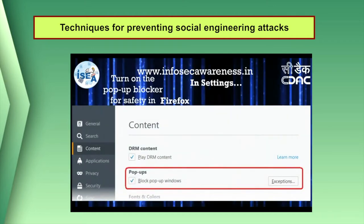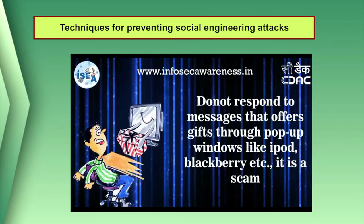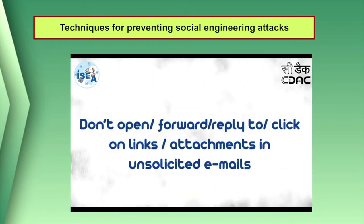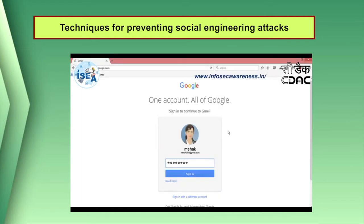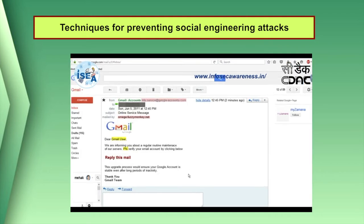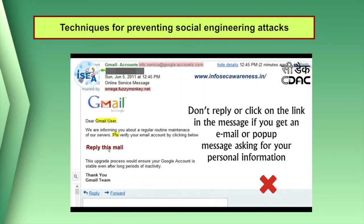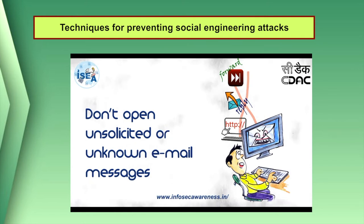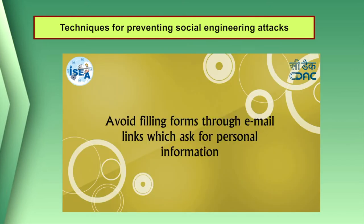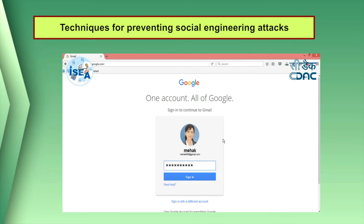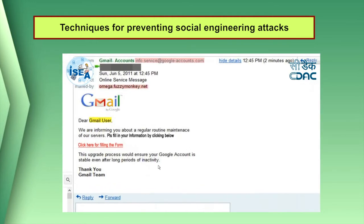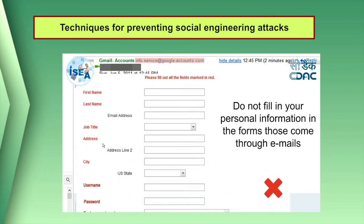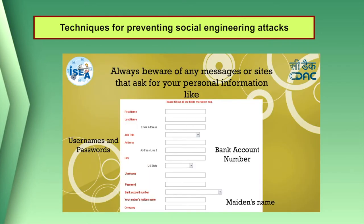The following tips can help improve your vigilance against social engineering. Be suspicious of unsolicited phone calls, visits, or email messages from individuals asking about employees or other internal information. If an unknown individual claims to be from a legitimate organization, try to verify their identity directly with the company. Do not reveal personal or financial information in email and do not respond to email solicitations for this information, including following links sent in email.